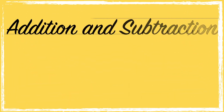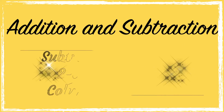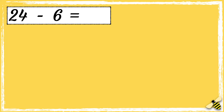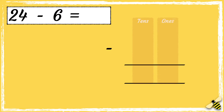In today's video we're going to use column subtraction to subtract one-digit numbers from two-digit numbers. Here is a number sentence: 24 take away 6. It's really important to line the numbers up correctly when you're doing column subtraction, so we have the tens in one column and the ones in another column.